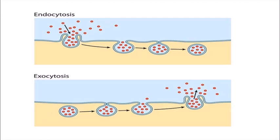How do substances travel into the cell? Substances travel inside the cell by different processes such as diffusion and osmosis. Here we will look at two cellular activities that consume cellular energy. First is endocytosis and second is exocytosis. Endocytosis is the entry of some substance into the cell from the outer environment — when a substance from the outer environment comes inside the cell, that is called endocytosis.